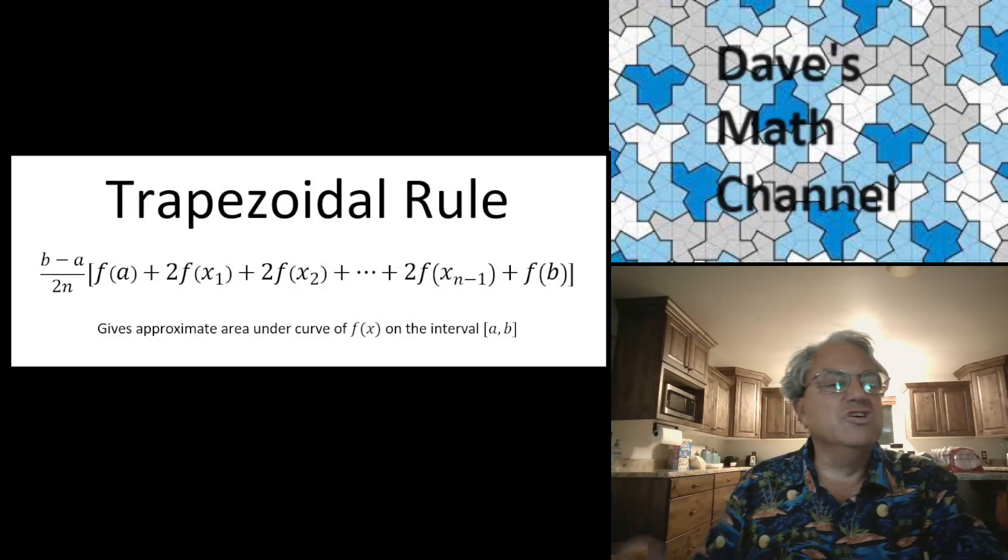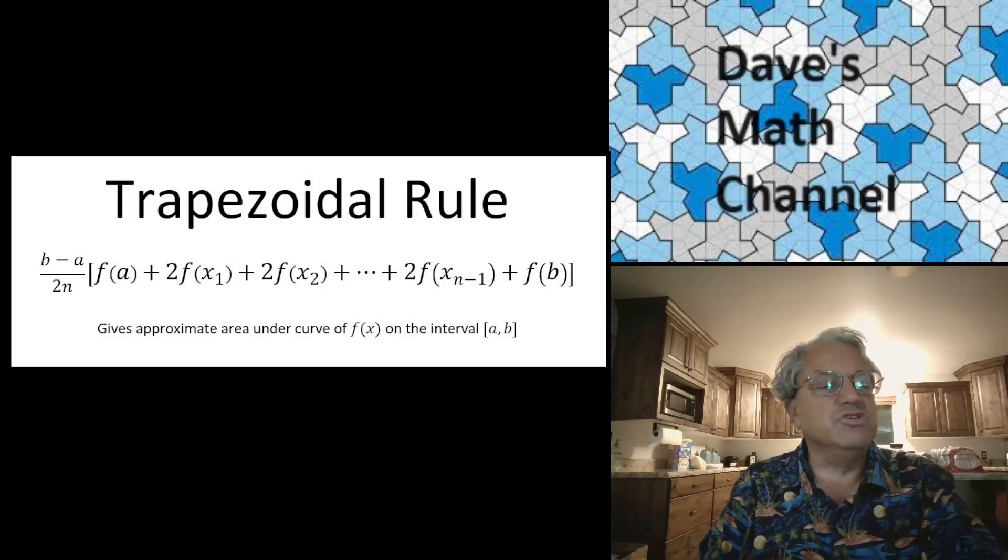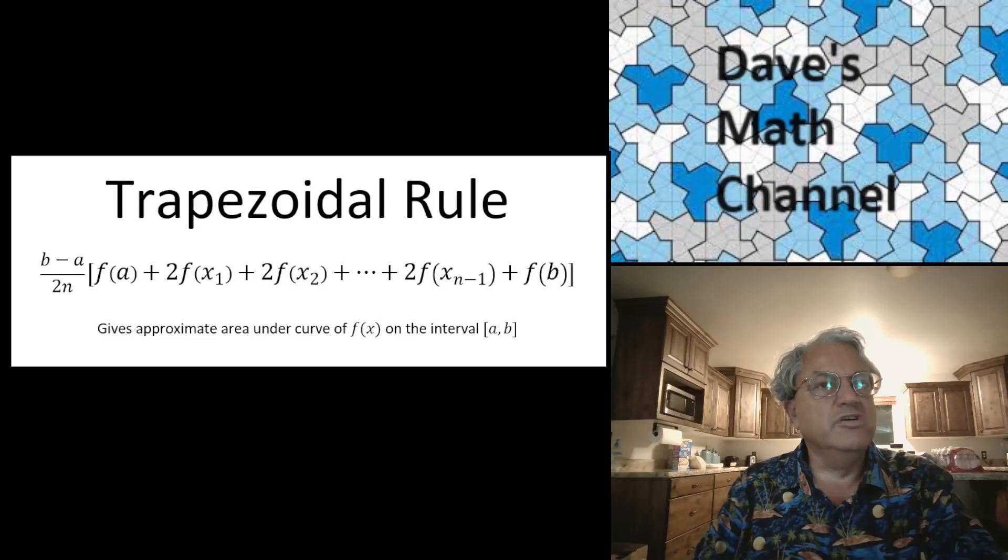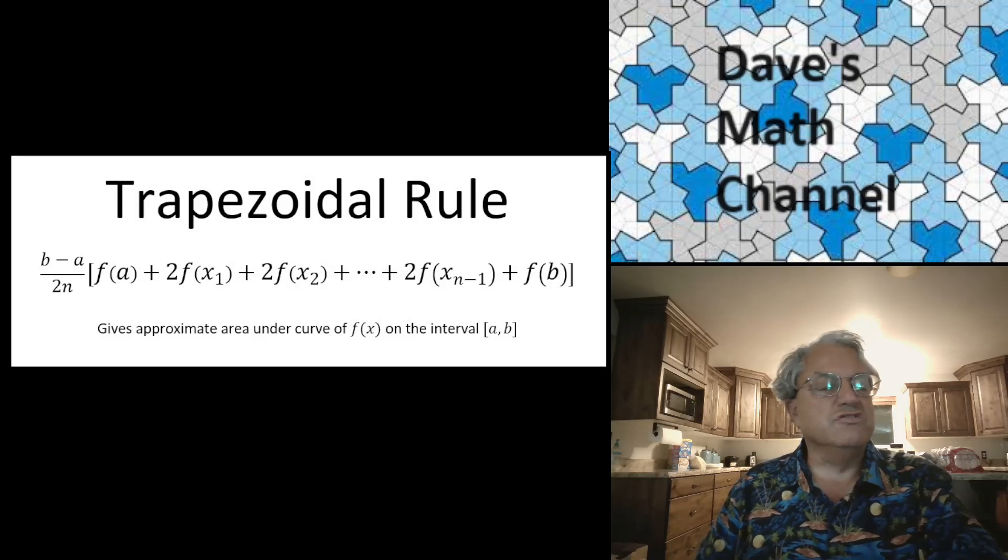So here's what it is. You start with a multiplicative constant on the outside, B minus A over 2N. That should be a capital N, the way I'm using it. But B minus A is just the width of the integral, and you're dividing by N because there's N bars and subintervals. But then you also divide by 2 because you're using the formula for the area of a trapezoid.